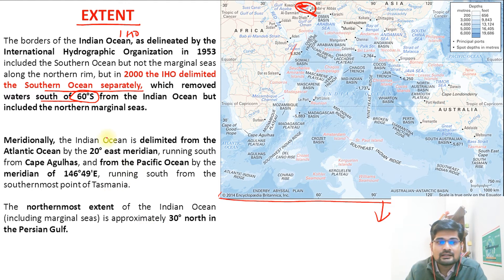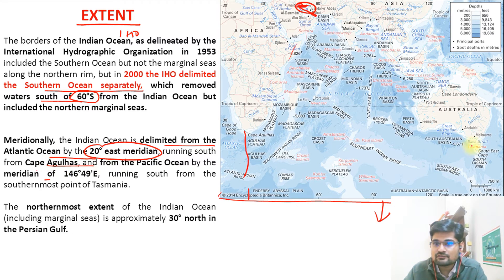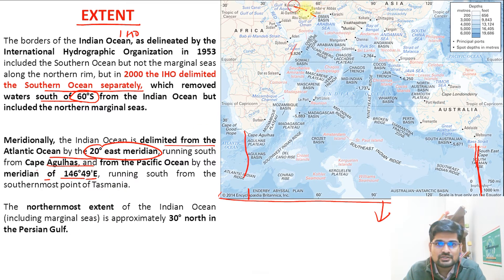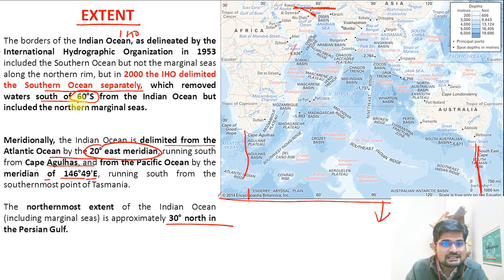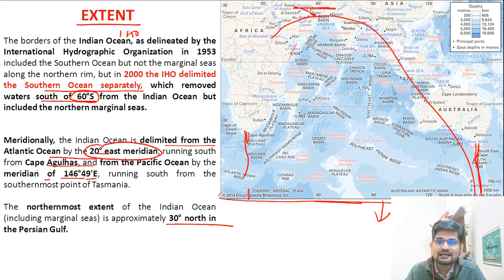Meridionally, the Indian Ocean is delimited from the Atlantic Ocean by the 20 degree east meridian, running south of Cape Agulhas. From the Pacific Ocean, it is bounded at 146 degrees 49 minutes east — the South Tasman Sea. So the extent is from 30 degrees north at the Persian Gulf to 60 degrees south in latitude, and from 20 degrees east to 146 degrees east in longitude.